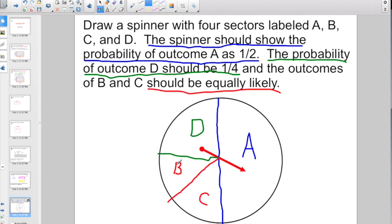That would be outcome B and that would be outcome C. They wanted A to be a half, D to be a fourth, and B and C to be equal. That looks like it fits the bill.